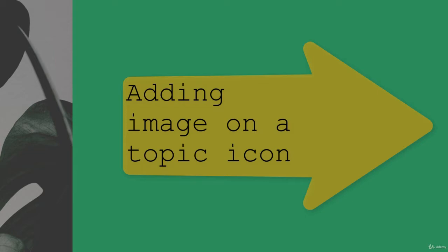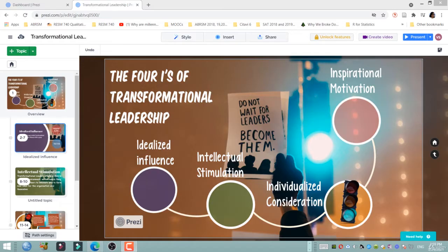This time I'm going to add an image on top of a topic icon. For example, idealized influence has an icon, so I'm going to add an image on it. It gets a little tricky, so watch very carefully.